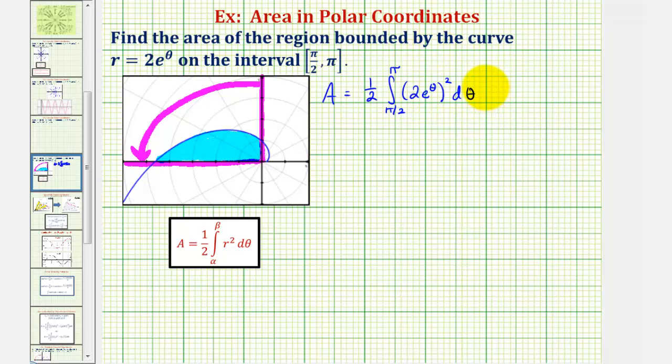Let's evaluate this. Notice how two squared would be four, and four times one-half is two. So we'd have two times the integral of e raised to the power of... when we have powers of powers we multiply, this would be e raised to the power of two theta, d theta from pi over two to pi.